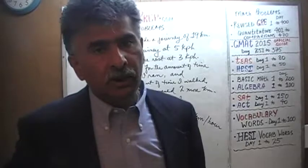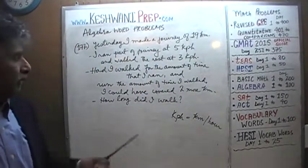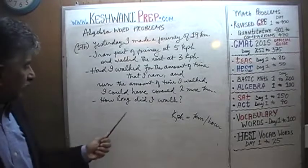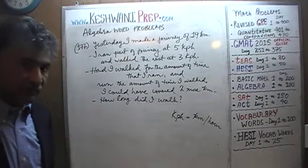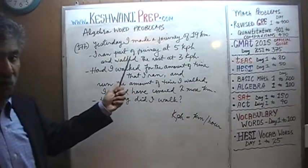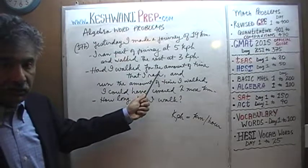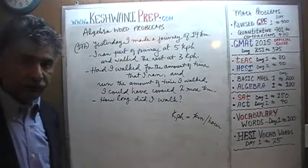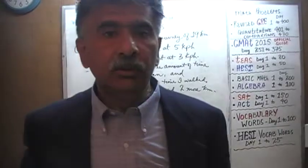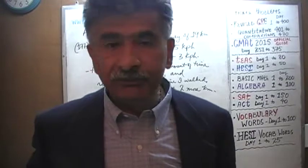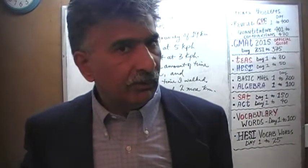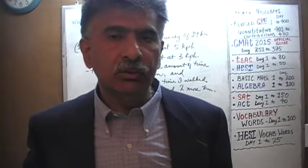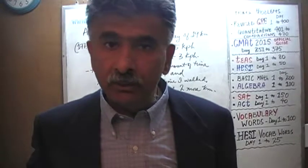This is a quite straightforward problem. We know that we are going to cover 19 kilometers, part of the journey at 5 kilometers per hour, then walk at 3 kilometers per hour. The question is how long did I walk, knowing that had I done the reverse, I could have covered 2 more kilometers. If you want to try it yourself, pause the video, do the problem, and once you have your own work you can resume and compare with what we'll do together in a few seconds.